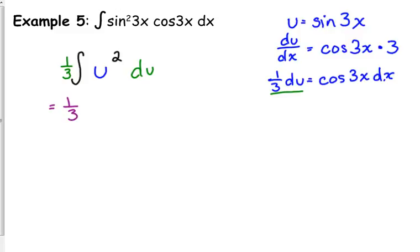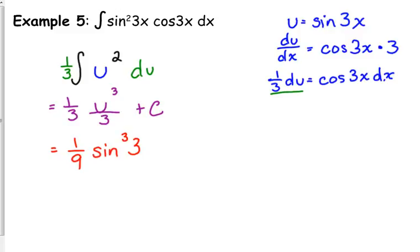Anti-differentiate: add 1 to our exponent, divide by our new exponent, don't forget the plus c. That gives us 1/9 of sine cubed of 3x plus c when I substitute my u back in.